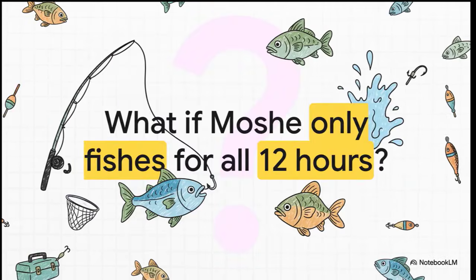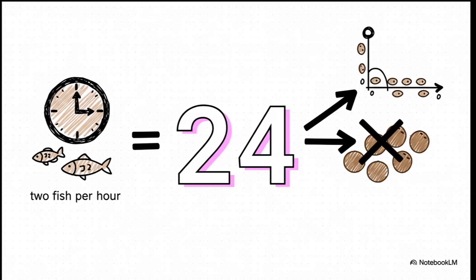Let's start with the extremes. What if Moshe decides to go all in on fishing? He spends all 12 of his hours at the water. How many fish does he end up with? 24. The math is easy: 12 hours times two fish an hour. But — and this is key — that means he gets zero coconuts. So let's pop our first point onto the graph: 24 on the fish axis and zero on the coconut axis.